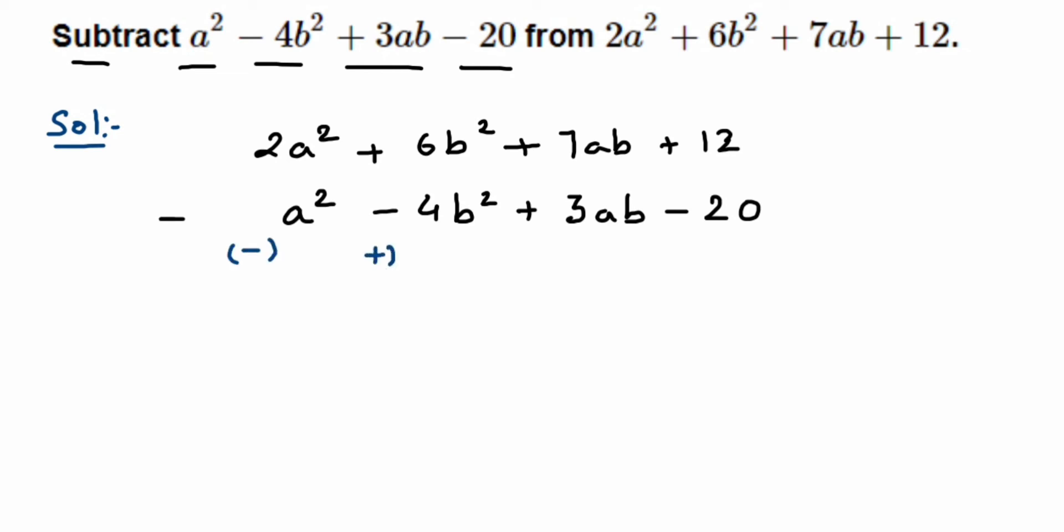a² is positive, it became negative. Now 4b² is positive negative, it becomes positive. 3ab is positive, it will be negative. -20 is negative, so it will become positive. Now when you solve it, you have to consider the new signs, not the previous ones.